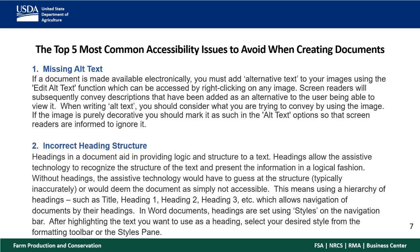The top five most common accessibility issues — someone from NRCS once asked what's something simple to start with for their folks. The first is missing alt text. Alt text is when you add alternative text to an image; it's what the screen reader reads. NRCS documents often have very detailed pictures, but if they don't have alt text explaining what's in the picture, somebody with a screen reader or vision issues cannot gain anything from it. You need to add the alt text.